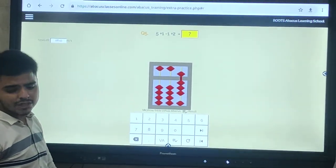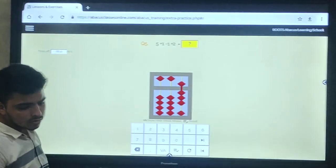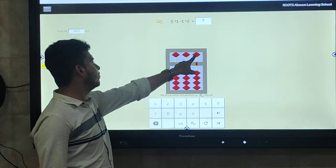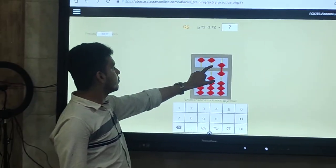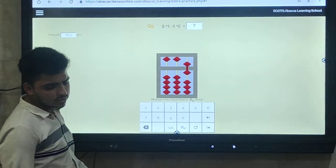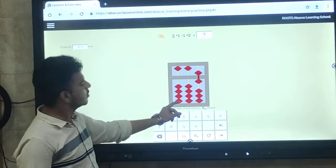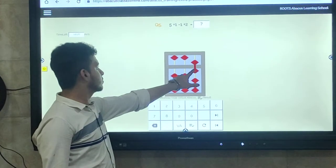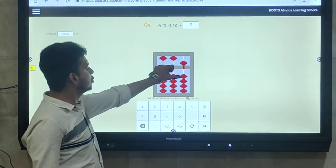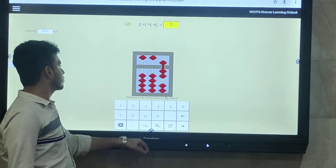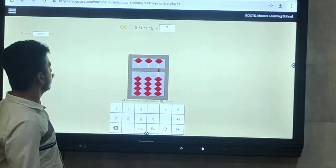Before starting next sum, first what do we do? 5 plus 1. For subtracting one, what do we use? For subtracting 1, which finger will be used? Plus 2. Answer.